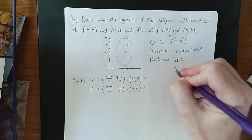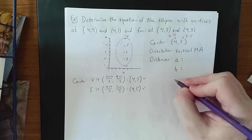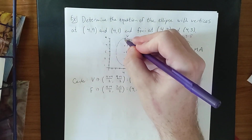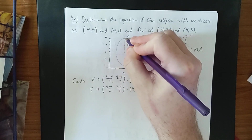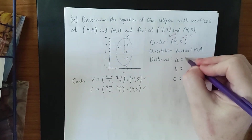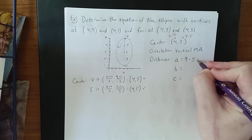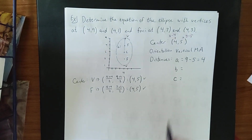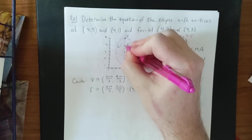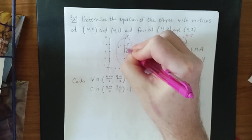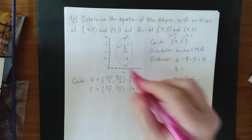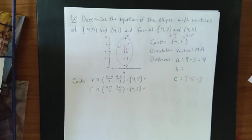For distances, we only need a and b for the equation, but because foci are involved, c will be needed as well. The value of a is the distance from the vertex to the center: top y-coordinate 9 minus center y-coordinate 5 gives a = 4. We don't know b yet since we don't have co-vertices. For c, the distance from focus to center: top focus y-coordinate 7 minus center y-coordinate 5 gives c = 2.